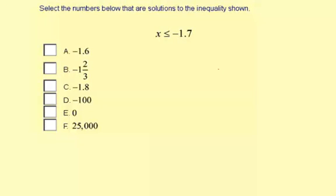Select the numbers below that are solutions to the inequality shown. The inequality is x is less than or equal to negative 1.7. We want to look at all the given numbers and see which ones are solutions to the inequality. A solution makes the inequality true.